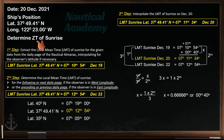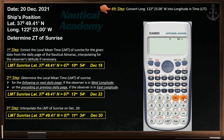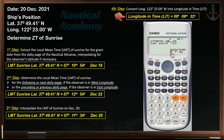Before we can determine the zone time of sunrise, we need to apply the observer's longitude, but we need to convert this arc into time. Our next step is to convert the observer's longitude into longitude in time, LIT. This is simple if you have a calculator: enter 122 degrees 23.0 minutes, divide by 15, and press equals. Change the unit of arc to a unit of time. Our longitude in time is 8 hours 9 minutes 32 seconds.